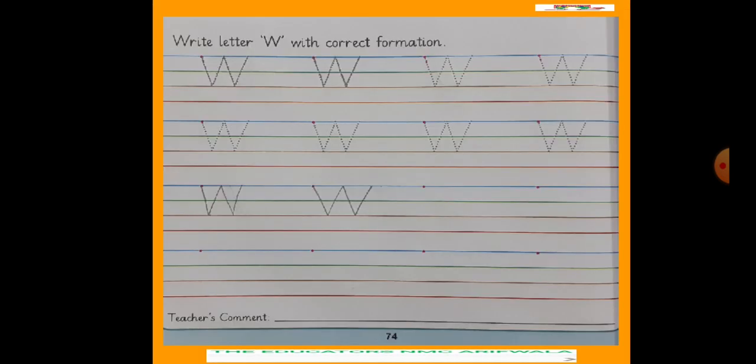Then you have to write letter W with correct formation. You have to do tracing letter W, then you have to write W. Write it very neat and very nice. You can write it in the first three lines, two lines and three lines.